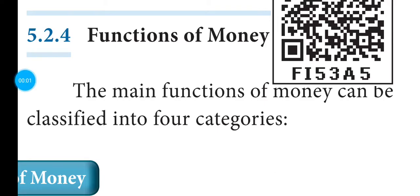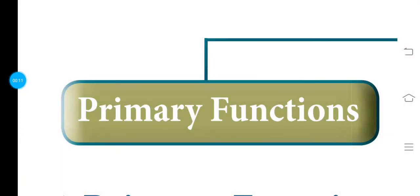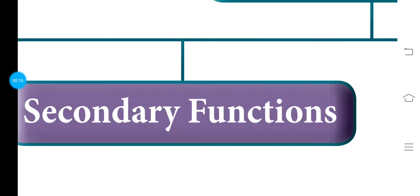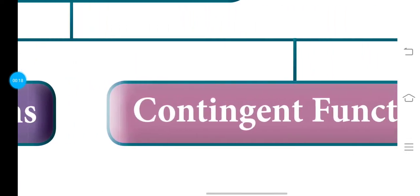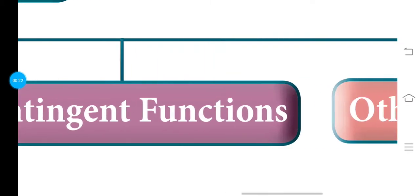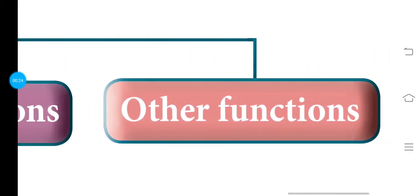Hello everyone. I'm going to talk about functions of money in this video. Functions of money are classified into four categories. First category is primary functions. Second category is secondary functions. Third category is contingent functions. Fourth one is other functions. These are the four categories of functions of money.